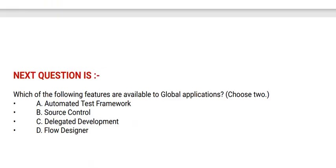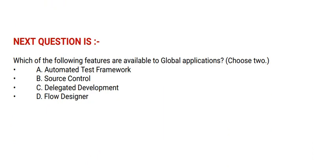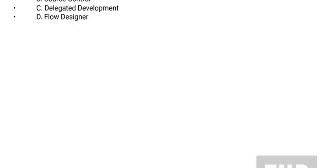Next question is: which of the following features are available to global applications? Choose two options. Option A: automated test framework. Option B: source control. Option C: delegated development. Option D: flow designer. And the correct answer is option A and D.